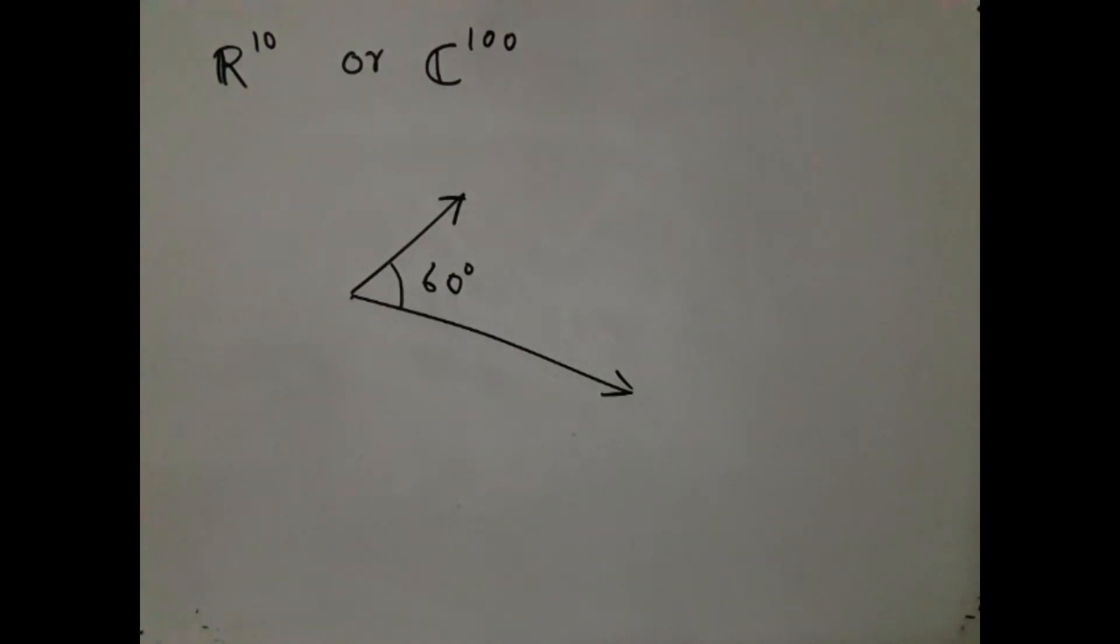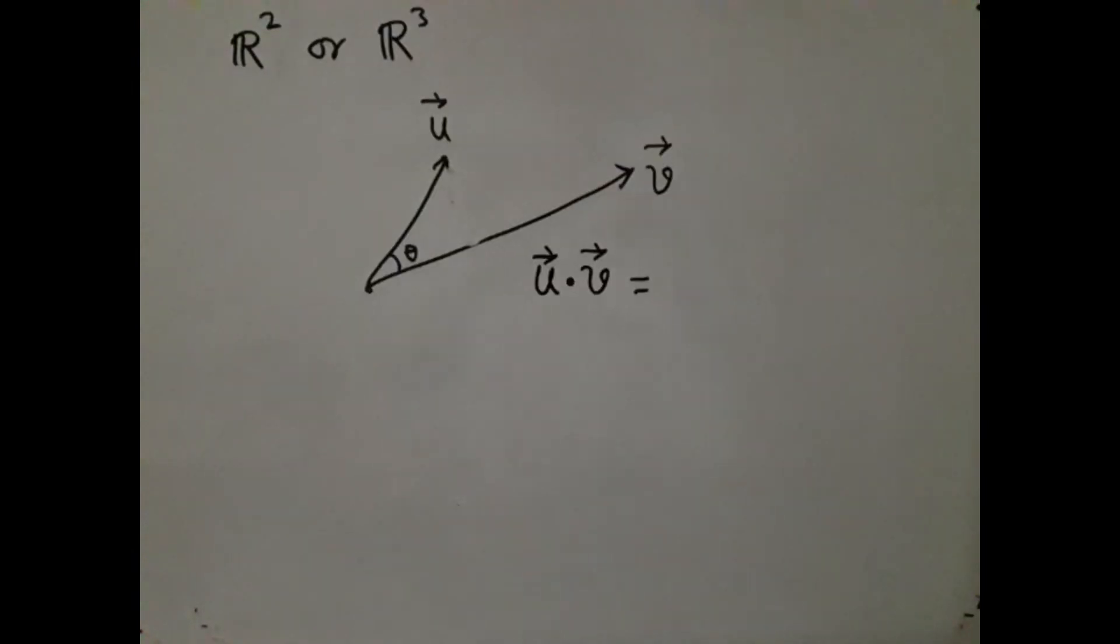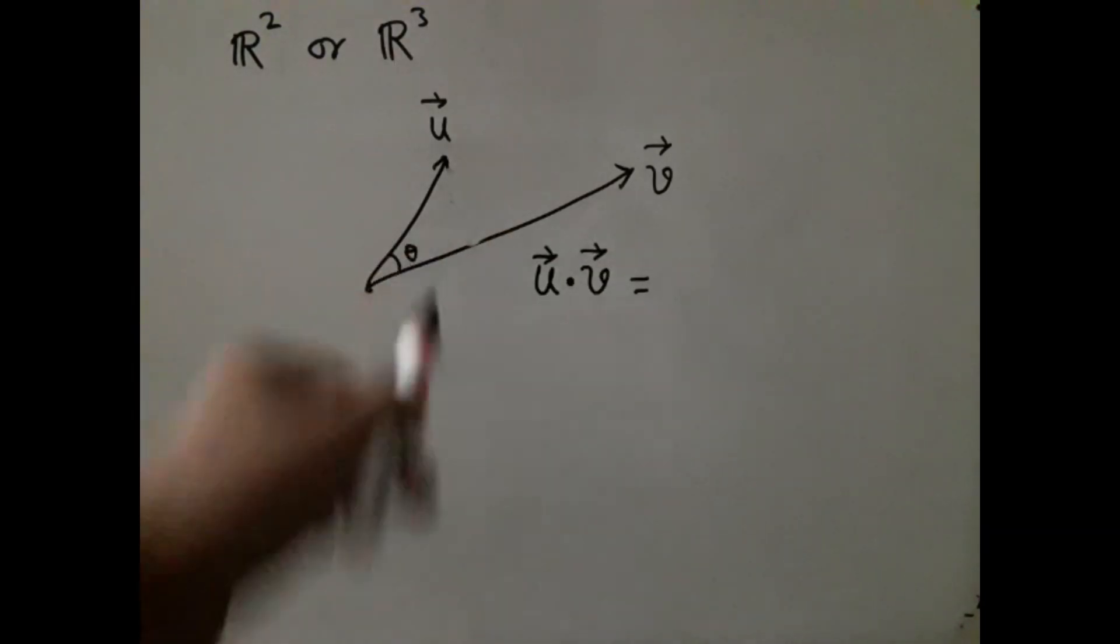To see this, we take a look at the geometric interpretation of dot products in R^2 or R^3.